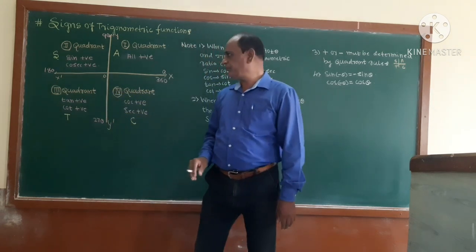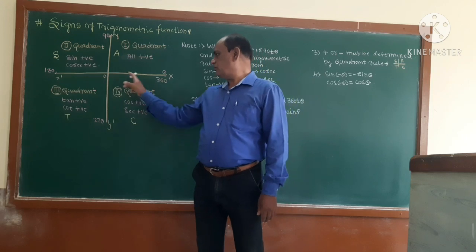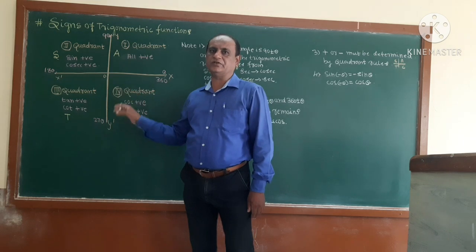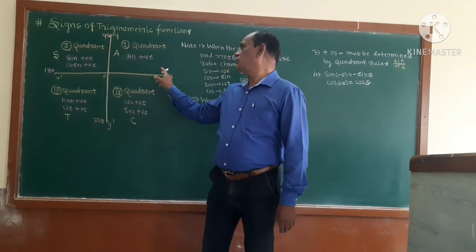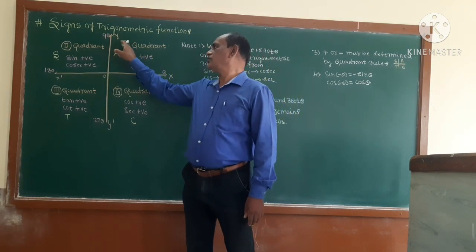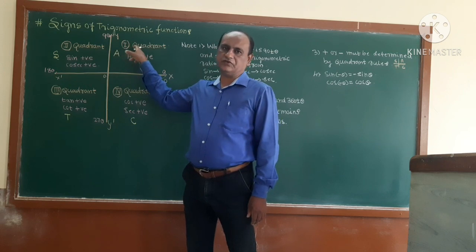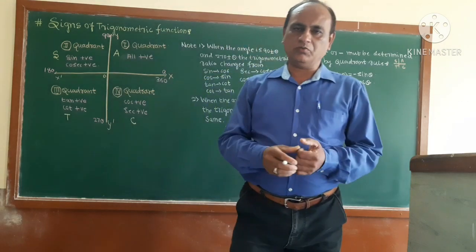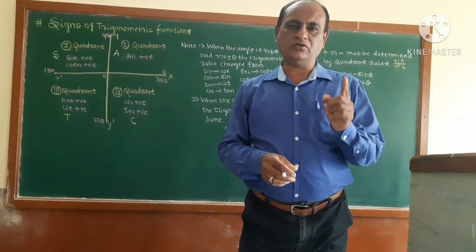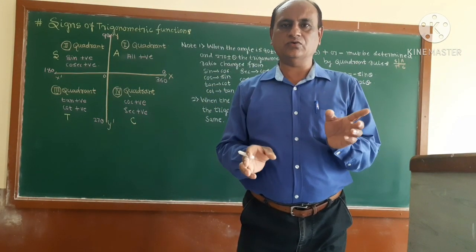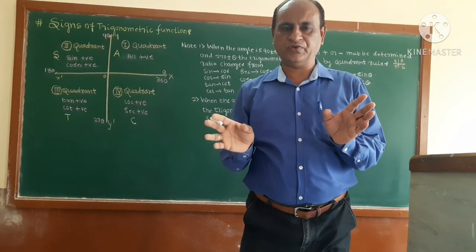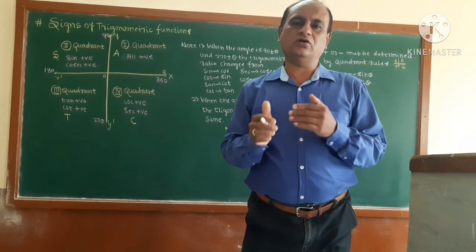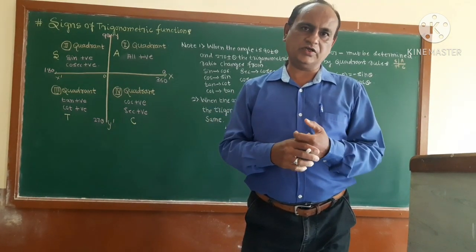The third and fourth quadrants follow. So from 0 to 90 degrees, the angle lies in the first quadrant. In the first quadrant, all trigonometric functions are positive — sine, cos, tan, cot, sec, and cosec are all positive. In 0 to 90 degrees, lying in the first quadrant, all trigonometric functions are positive.